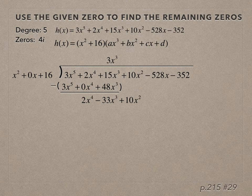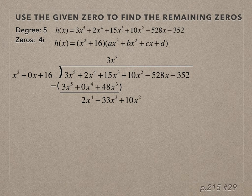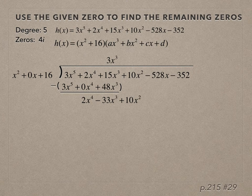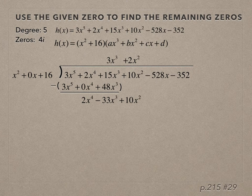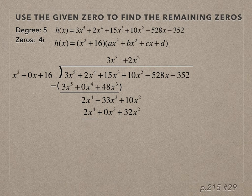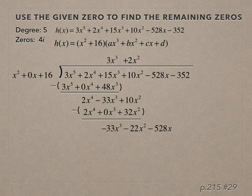We go through the process again. x² times what is 2x⁴? x² times 2x² is 2x⁴. So we take 2x², multiply it by the terms in the divisor, subtract (remembering to add the opposite), and bring down -528x.